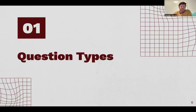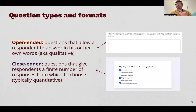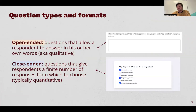Let's talk about some of the actual specific question types. In general, you have two large buckets. You have what we call open-ended questions, which are essentially text write-in fields — literally asking someone what did you think, and the respondent types out their answers. Then you have closed-ended questions, which are typically more quantitative in nature, giving respondents a finite list of responses to choose from — like a select all that apply or multiple choice question.